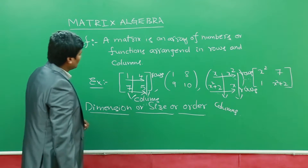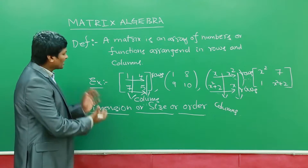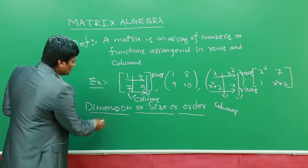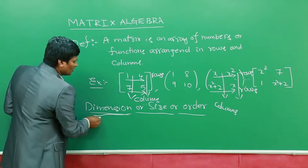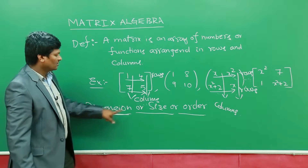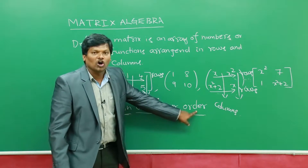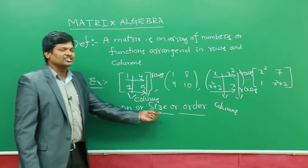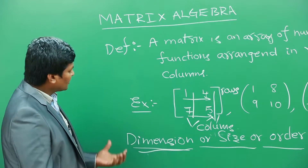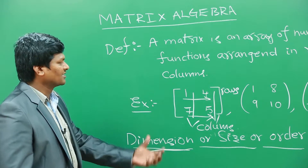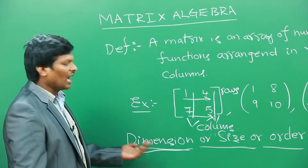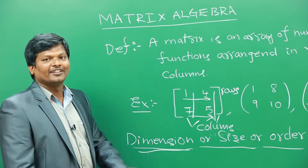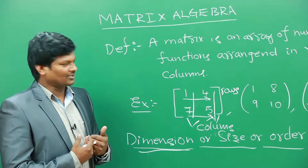Whenever there is a matrix, we talk about what is called the dimension, or size, or order — these mean the same thing. The dimension of a matrix is nothing but the number of rows and the number of columns in that matrix.